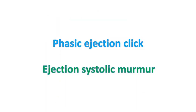Clinically important findings in valvular pulmonary stenosis are the ejection systolic murmur and phasic ejection click. The ejection systolic murmur in the pulmonary area may be associated with a thrill. The phasic ejection click is better heard in expiration and is the only right-sided event better heard in expiration. The ejection click, also called ejection sound, moves closer to the first heart sound in inspiration.